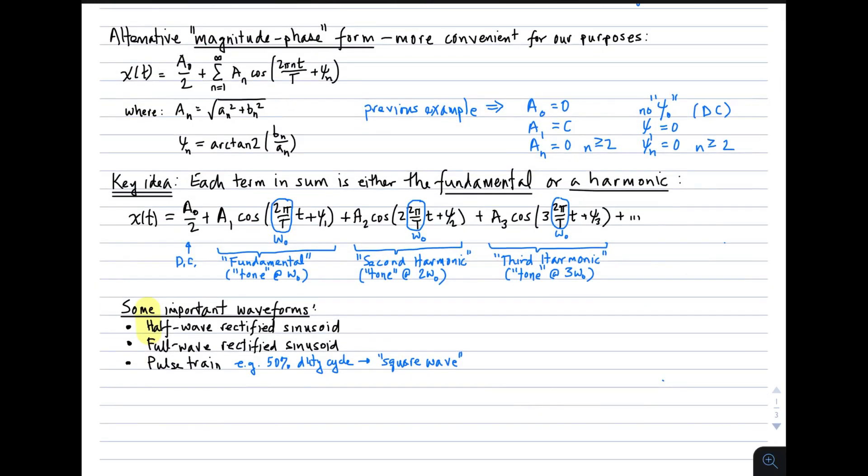Now, for our purposes, there is an alternative form known as the magnitude-phase form. In that form, it's still an infinite sum of sinusoids, but in this case, it's a little bit simpler. It's the sum of cosines with phase shifts, ψ_n. So we get DC plus an infinite sum of these cosine terms. So no more a_n and b_n, we have simply big A_n.